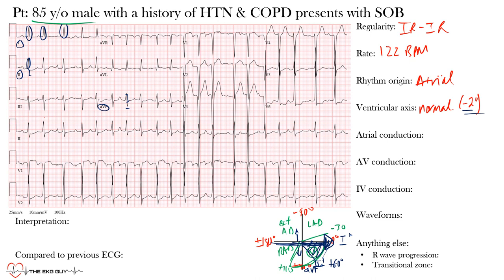For atrial conduction, we look at leads II and V1. P waves are present in both leads but have multiple different morphologies. Importantly, the criteria for assessing atrial enlargement — whether right or left — assumes sinus rhythm is present. Since sinus rhythm is not present here, we cannot comment on atrial abnormalities. Therefore, atrial enlargement is indeterminate.